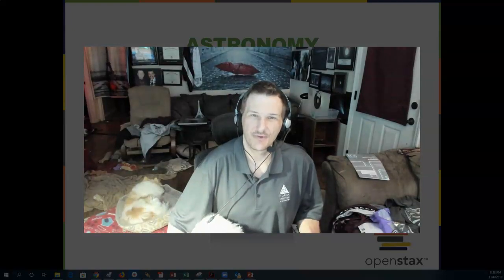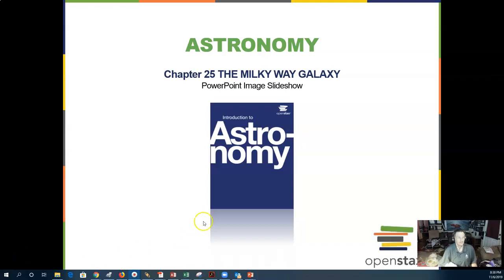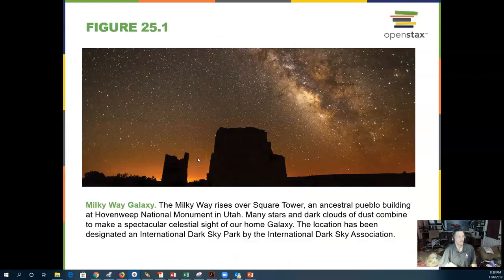Hello, this is Professor Jim Caffey, and today we are going to do chapter 25 on the Milky Way galaxy. Here we see the Milky Way galaxy over Square Tower, which is in Utah, part of the International Dark Sky Park.